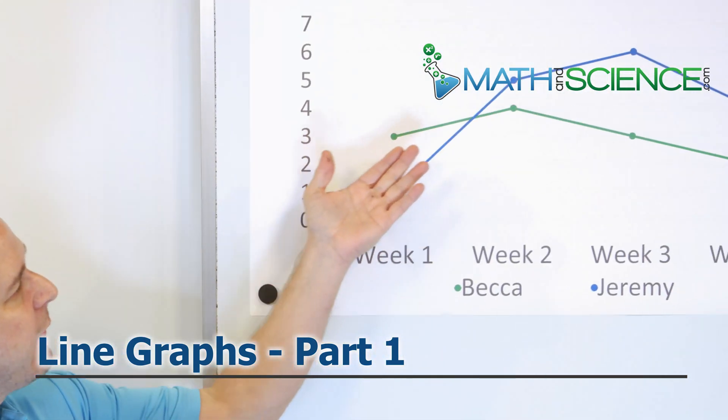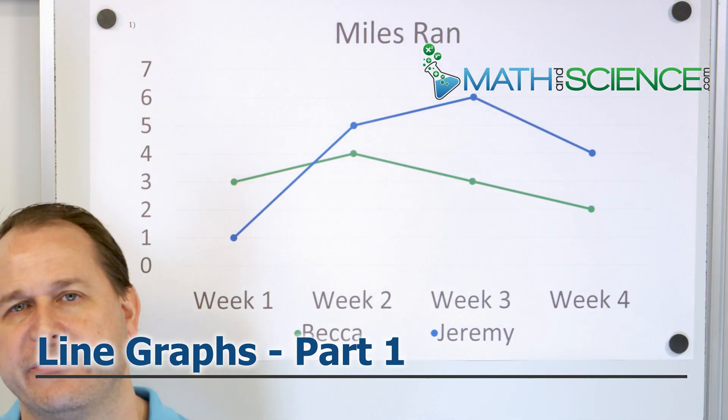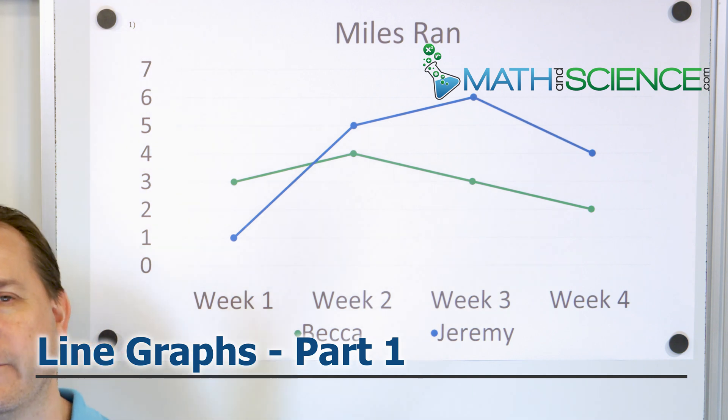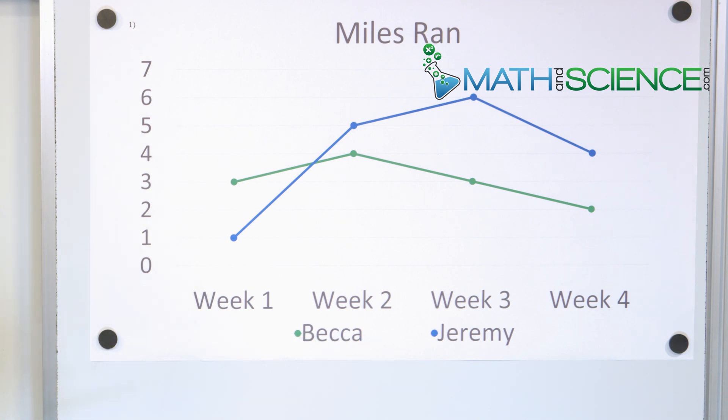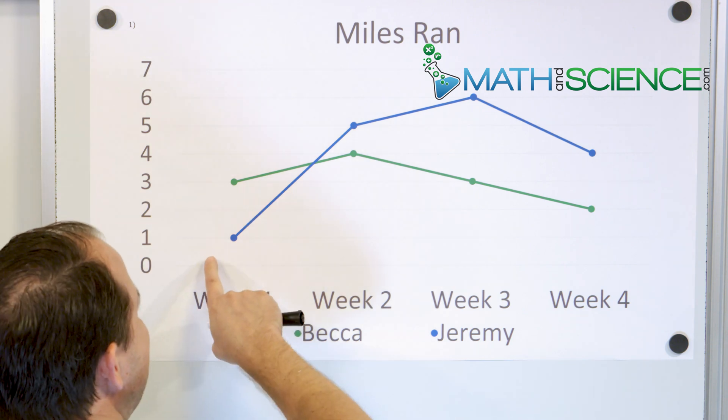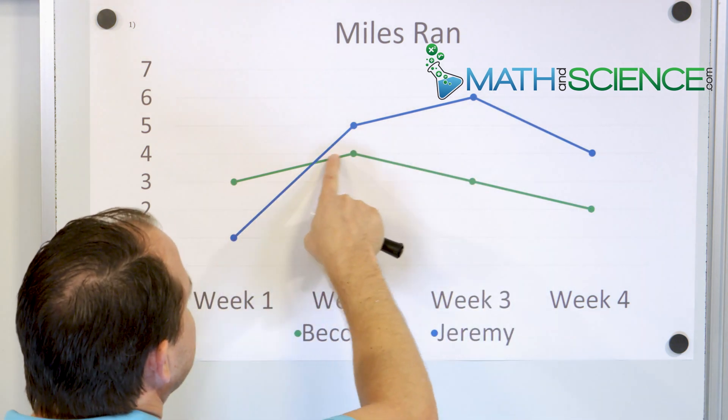Here we're going to learn how to take a look at a graph like this and interpret the results, understand what it's telling us, and also answer a couple of questions. Before we answer any questions, let's just take a look at this particular graph. It's regarding the number of miles that two people ran in a given week. So what you have is not just one line graph, you have two of them.